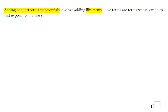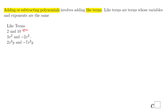Welcome, or welcome back, to C Squared. In this lesson we will talk about adding and subtracting polynomials. For adding and subtracting polynomials we have to combine what we call like terms. For example, 2 and 10 are alike. 3x squared and negative 2x squared are alike — they have the same variable x and the same power 2. It doesn't matter the number in front, so they are alike.